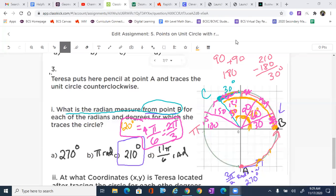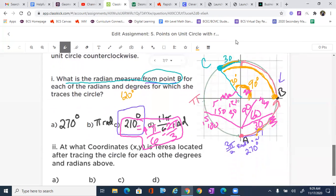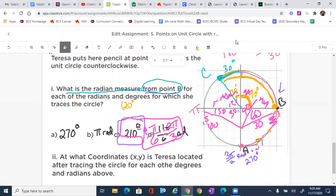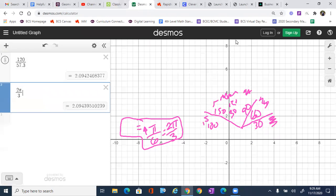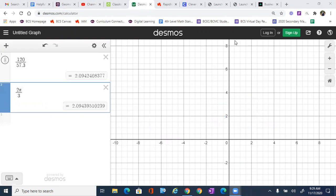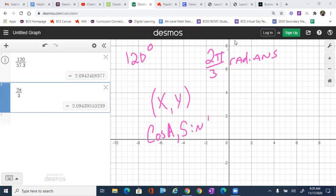Now, the last part of this problem was to determine what coordinates is Teresa located at. So if we go back, I'm going to use Desmos for this section. If we go back and we're looking for the coordinates, it's really nice and easy. So we knew that it was 120 degrees. We also knew that it was 2π over 3 radians. And if we remember, the coordinates are simple. X, Y can be determined by cosine of the angle and sine of the angle. And it doesn't matter which one we use.